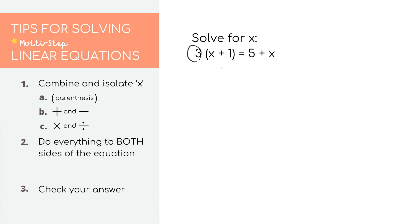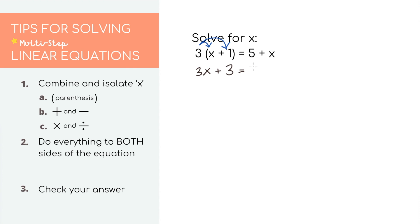Any time you see a value being multiplied by multiple values in parentheses, the distributive property will apply. What you'll do to simplify is multiply the number directly outside of the parentheses by each number inside the parentheses. Here we have 3 times (x plus 1) equals 5 plus x. When you distribute, you multiply 3 times x and 3 times 1. On the left side, you'll end up with 3x plus 3. And on the right side, keep 5 plus x.